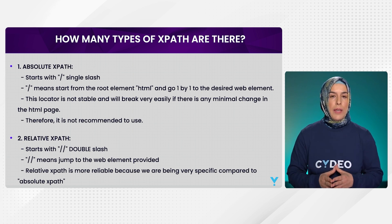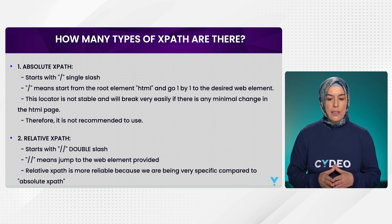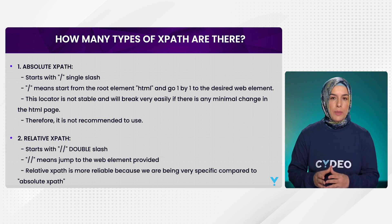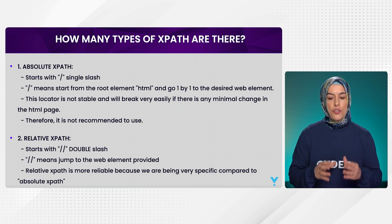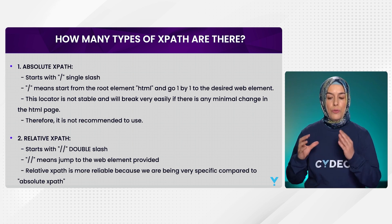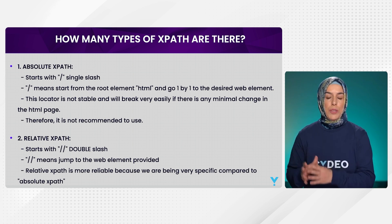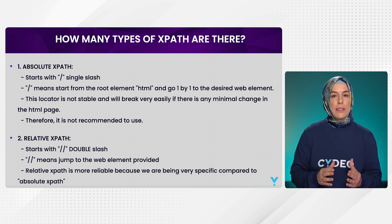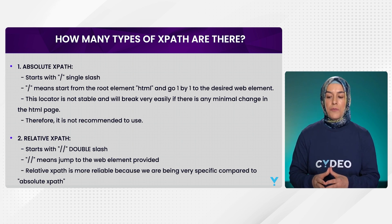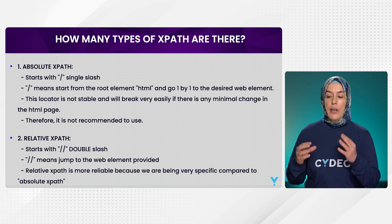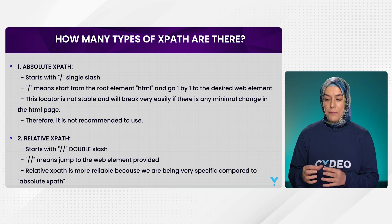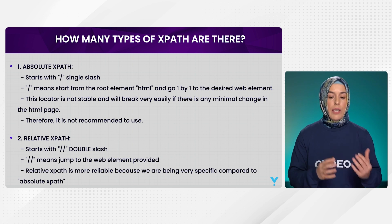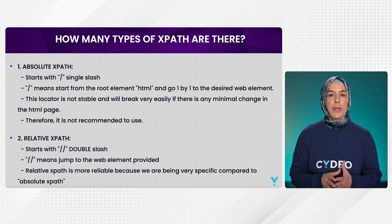Relative XPath is the one that we are using. It is starting with double slash, and it means it jumps directly to the web element provided. Relative XPath is more reliable because we are being very specific compared to absolute XPath.